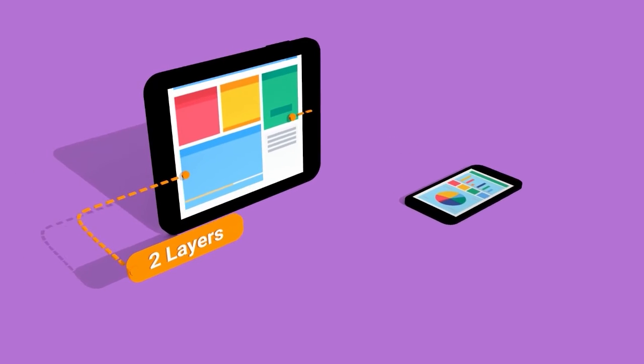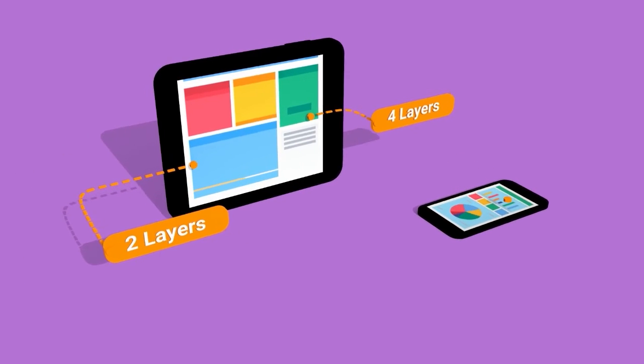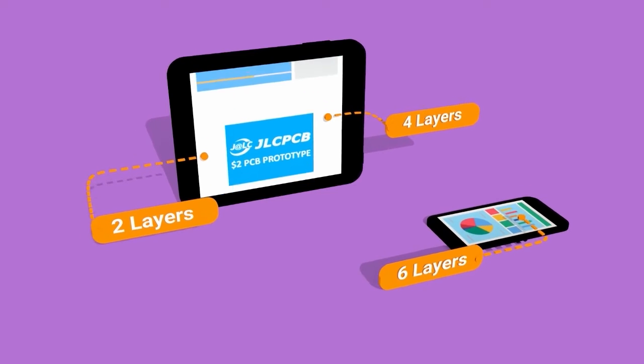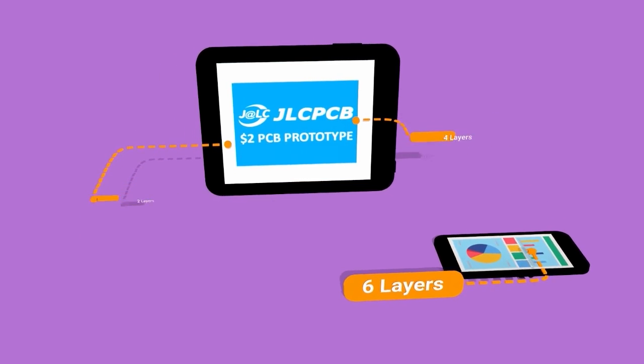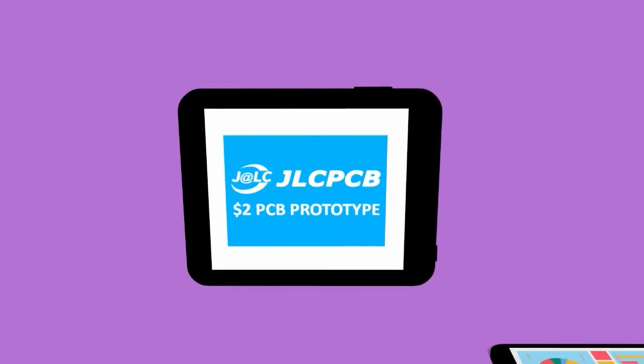Here you can order two layers, four layers, and six layers of PCB at a very cheap price — just $2.